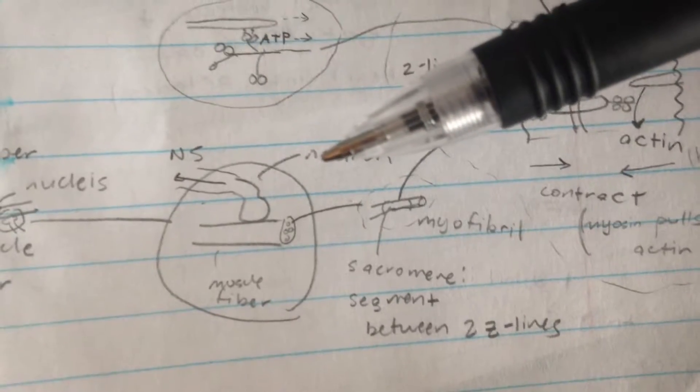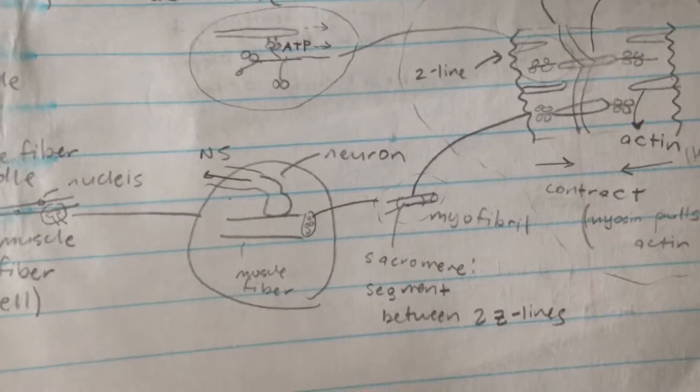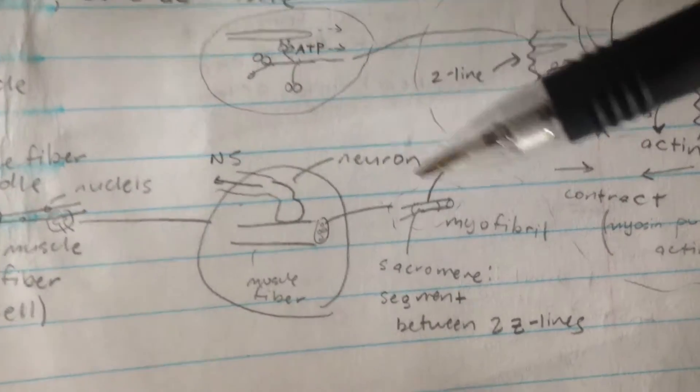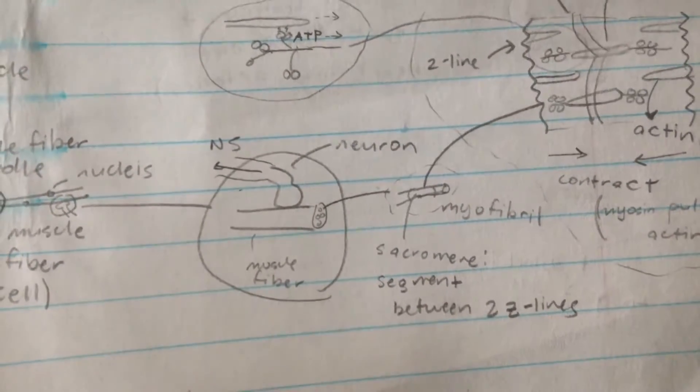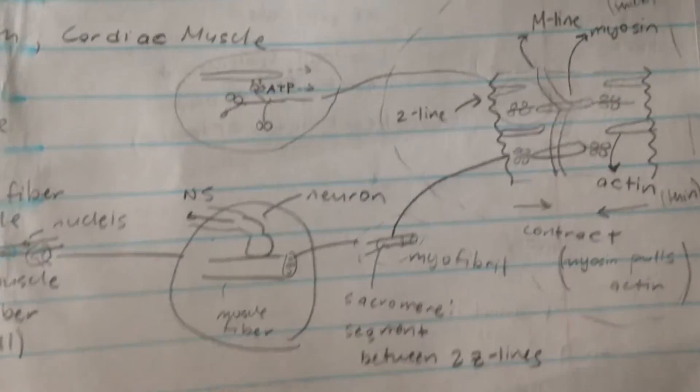Muscle fibers are made out of myofibril, which have segments called sarcomere. Sarcomeres are segments between two Z lines, and we'll see that over here.